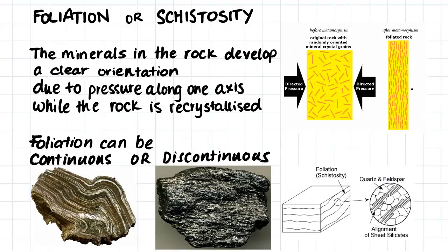But why does foliation occur? Foliation, or what is sometimes called schistosity, occurs because the minerals in the rock develop a clear orientation. The minerals will develop this orientation due to pressure along one axis, while the rock is being recrystallized.